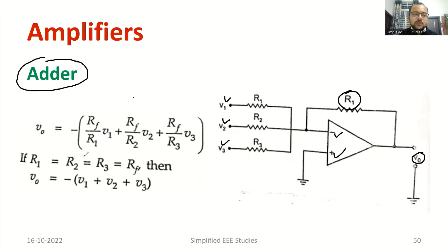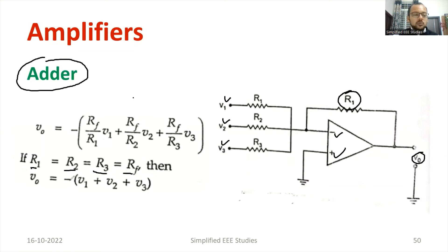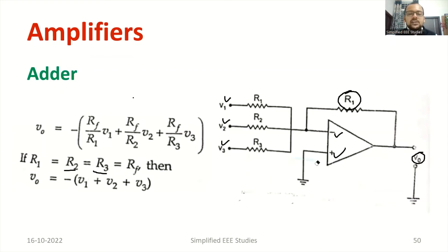While designing, you apply one condition: R1 equals R2 equals R3 equals the feedback resistor Rf. Therefore, Rf/R1, Rf/R2, and Rf/R3 all cancel out. The remaining term gives V0 equals minus of V1 plus V2 plus V3. So you are adding three input voltages at the inverting terminal — this is how the operational amplifier acts as an adder.